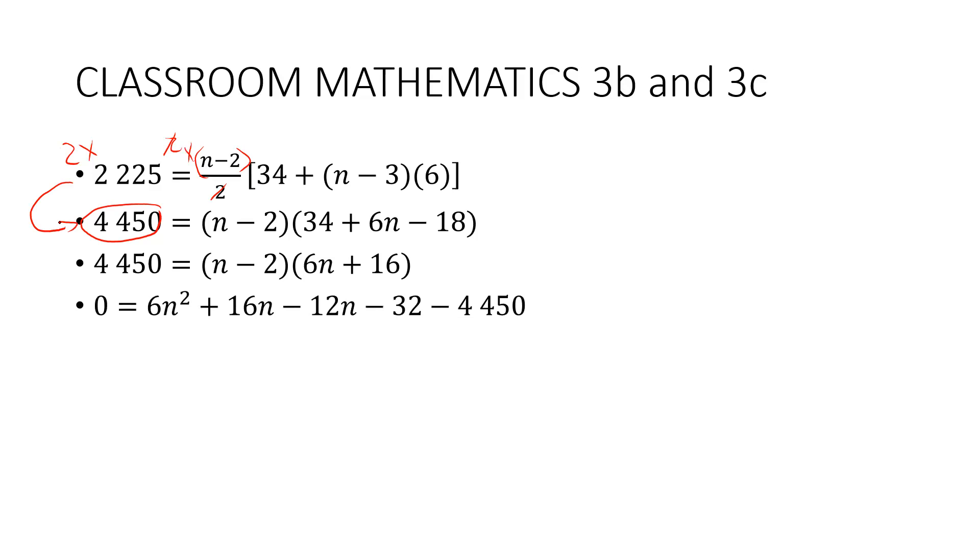That's what I got. Six n squared plus four n - in the middle you're supposed to have plus four n. Do you have plus four n? I have negative four n. I think that's where I went wrong. 16 minus 12 is four n. Yeah, I think that's where I went wrong.